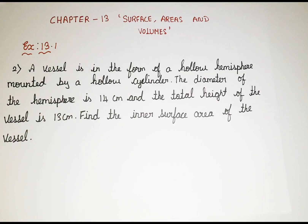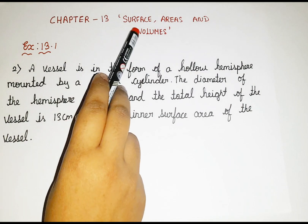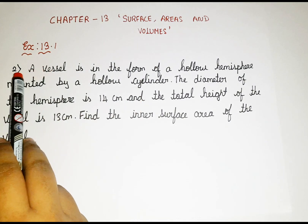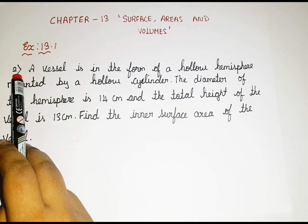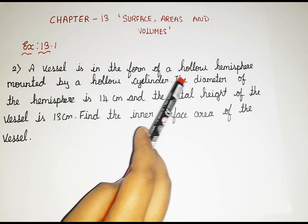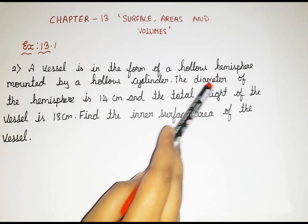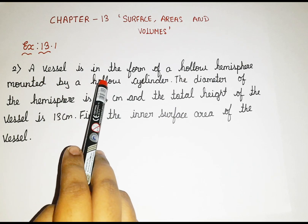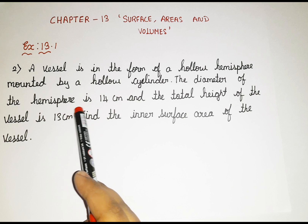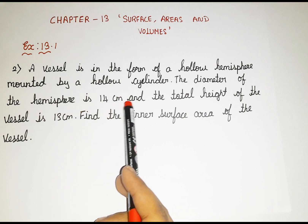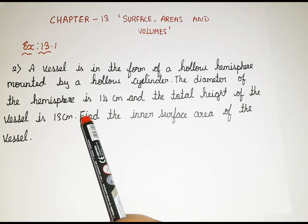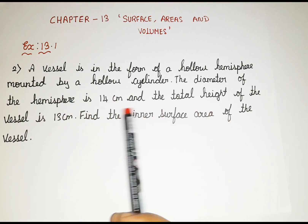Today we are going to be learning Chapter 13, Surface Areas and Volumes, Exercise 13.1, second question. Now let's read the question: A vessel is in the form of a hollow hemisphere mounted by a hollow cylinder. The diameter of the hemisphere is 14 centimetre and the total height of the vessel is 13 centimetre. Find the inner surface area of the vessel.